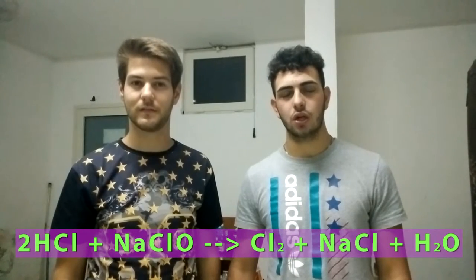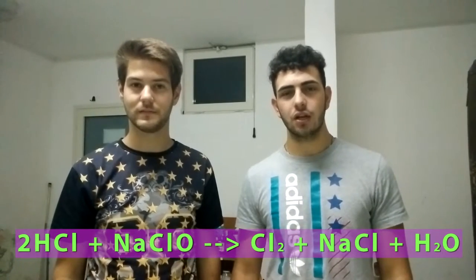Hello everyone, welcome back to Chemist by Destiny and today we will see another experiment in which we will use sodium hypochlorite, which is contained in bleach. This bleach will be added to hydrochloric acid to form a reaction in which chlorine will be produced. This chlorine will react with some metals that will be contained in coins and something else.